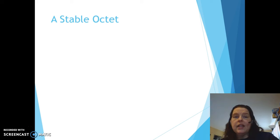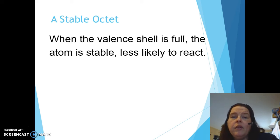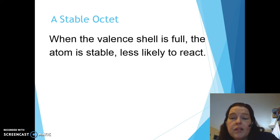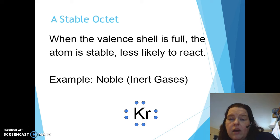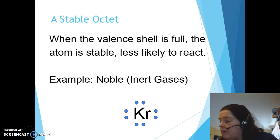A stable octet means that when the valence shell is full, the atom is stable and less likely to react. For example, noble gases like krypton have an octet of valence electrons and are therefore stable. Every other atom wants to achieve that same stability.